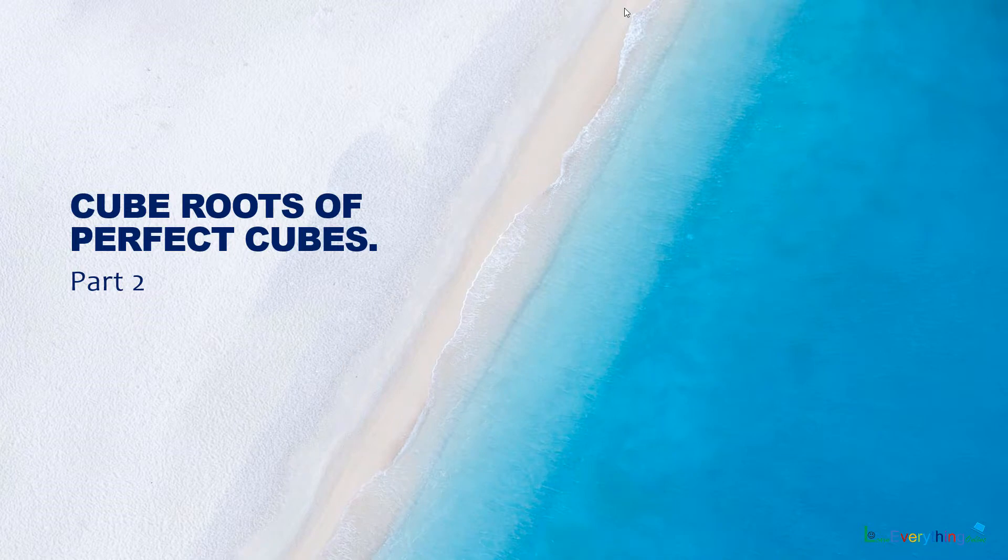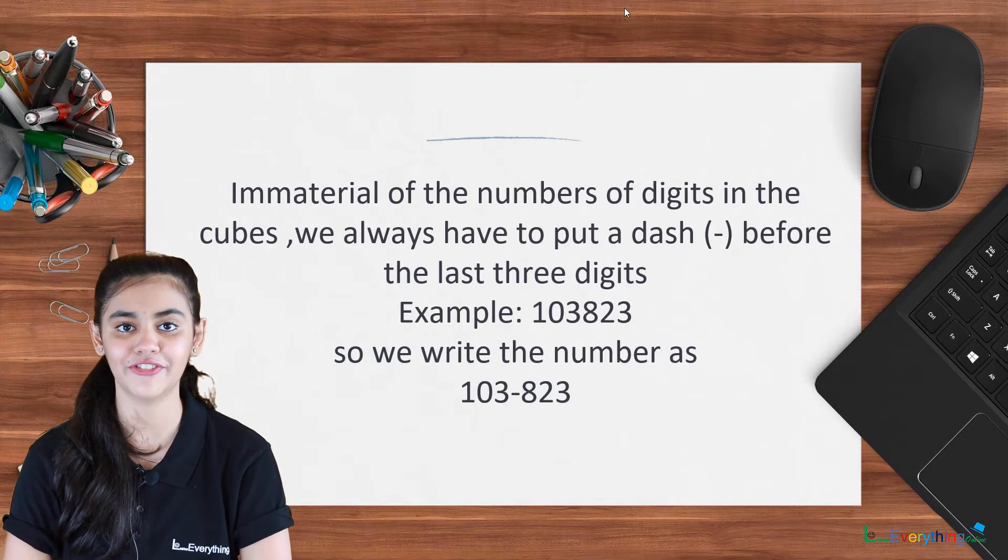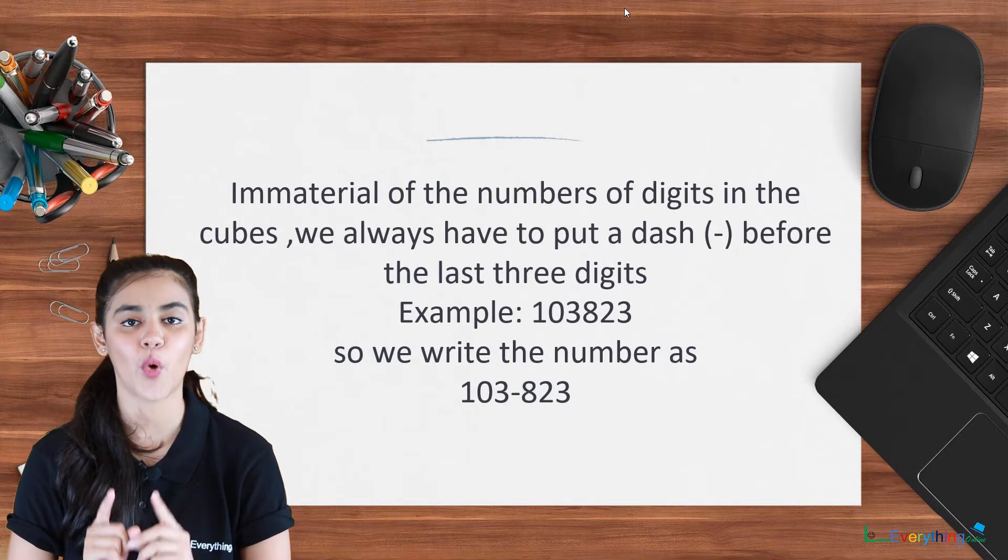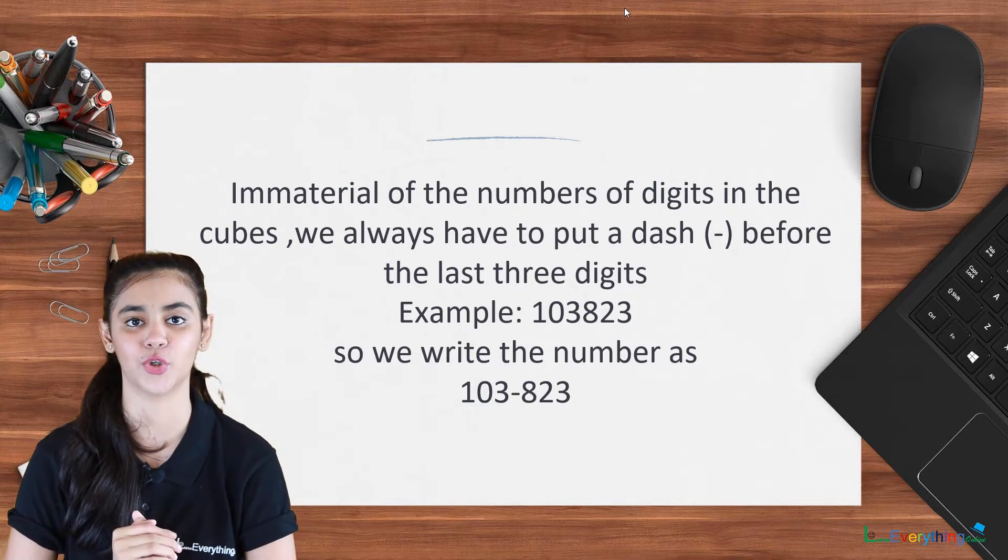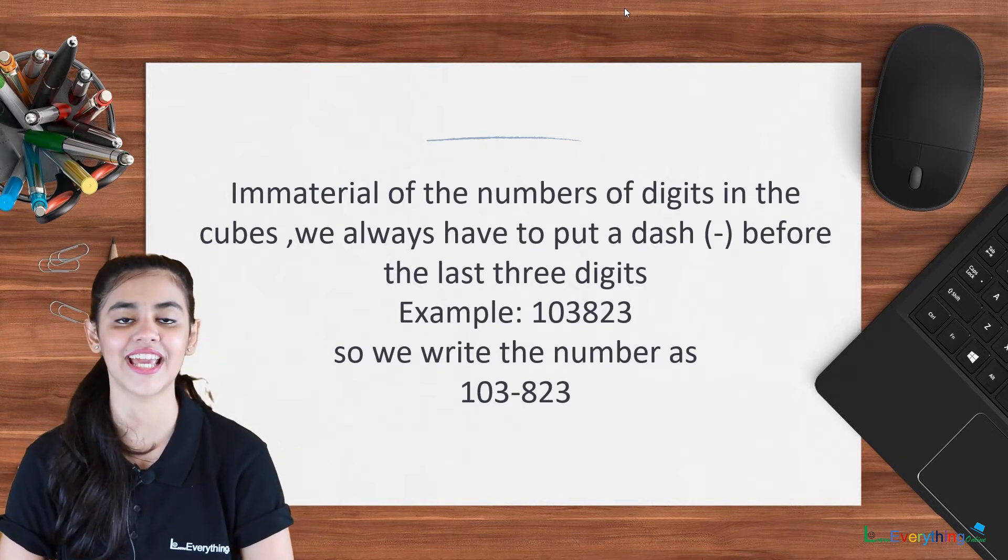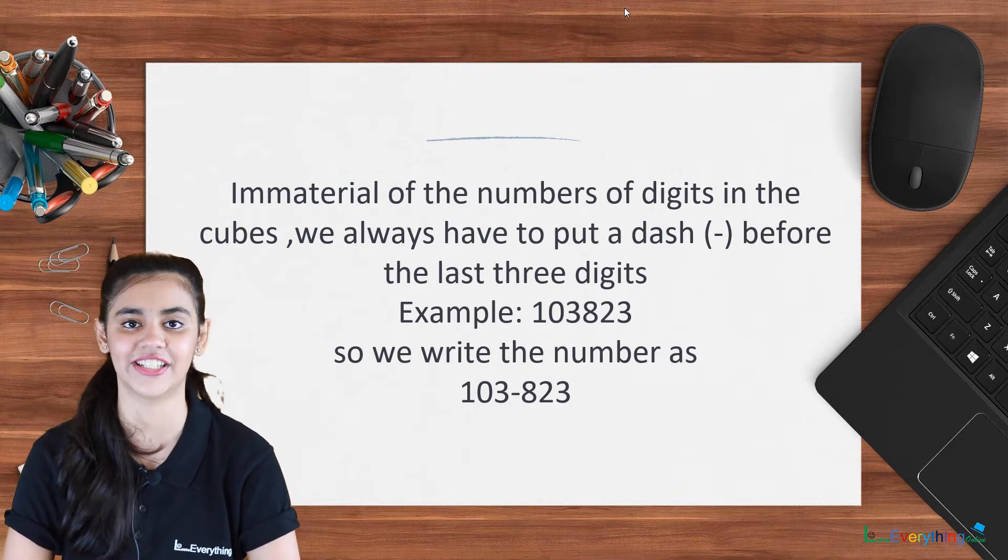Cube Roots of Perfect Cubes Part 2. Immaterial of the number of digits in the cubes, we always have to put a slash before the last three numbers of any cube. In the next slide we will see how the table is formed after putting a slash after the three numbers.